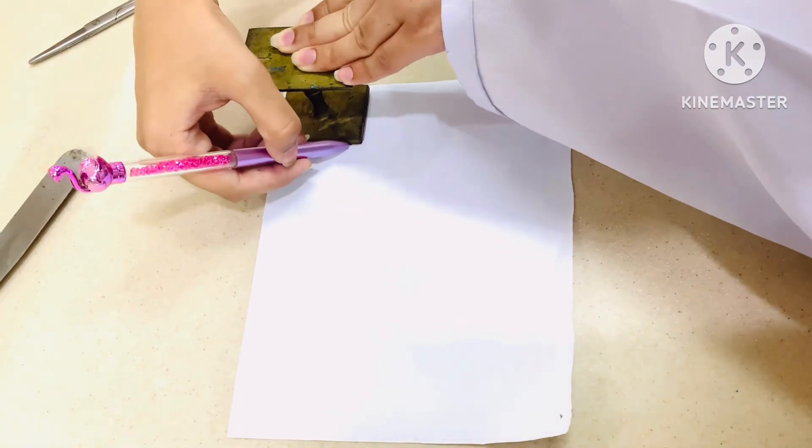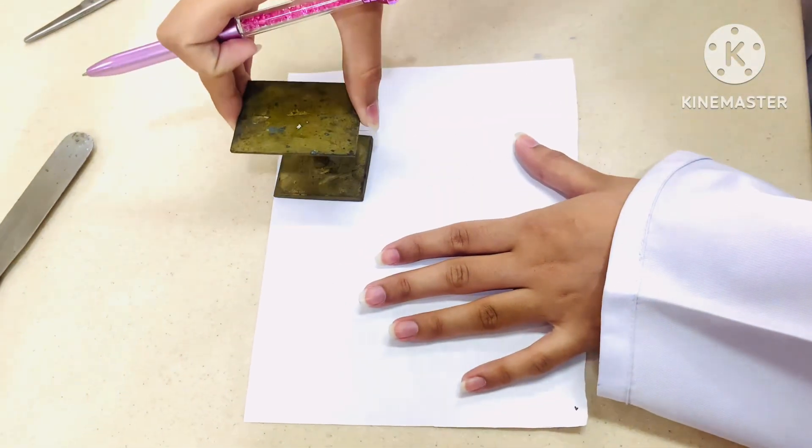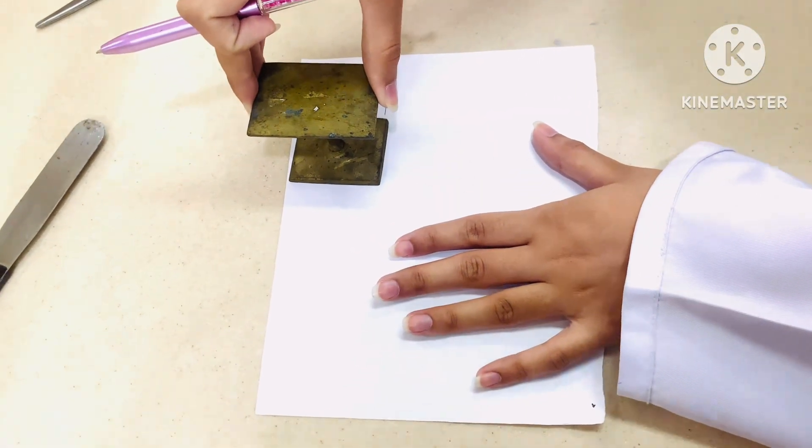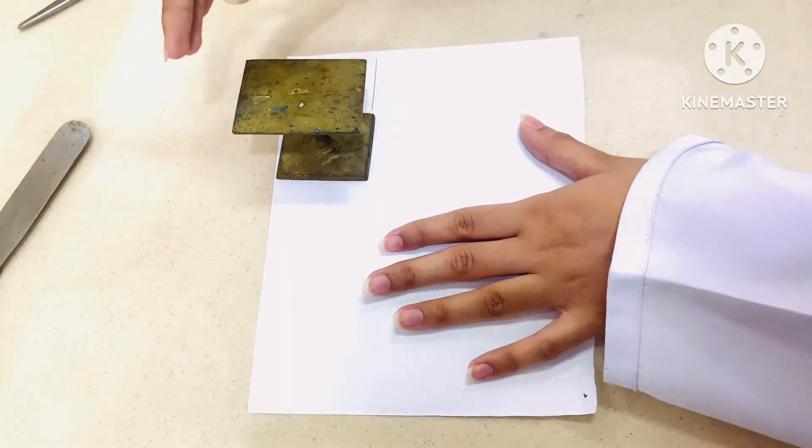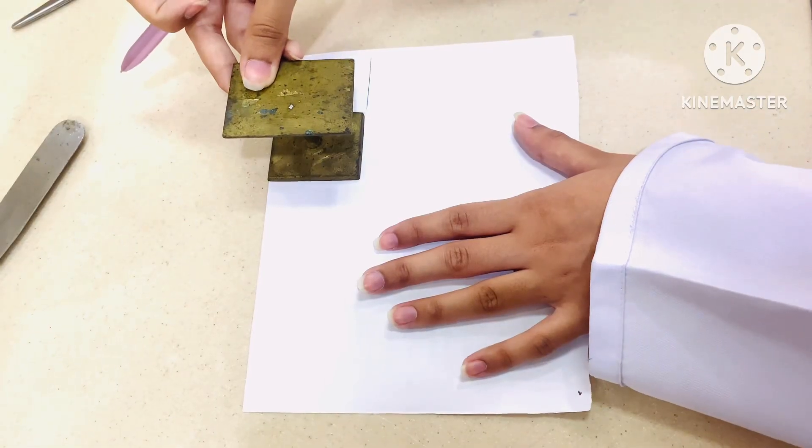First of all, we'll discuss folding of paper. For folding of paper, thick white paper should be used, which I'm using right now. The size of paper depends upon the weight of powder.